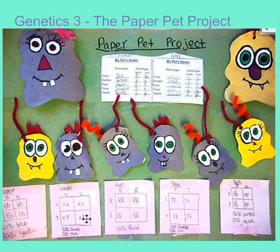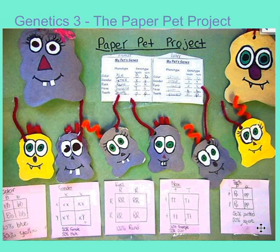The last thing you need to do is make five Punnett squares — one for each of the traits — so you can show me what was the probability of getting blue and yellow, male and female, and the different kinds of eyes, nose, and teeth. Make sure you put your name and your partner's name on the back and hand it in. I think that's a pretty good overview of this project. If you have any questions, ask me in class.